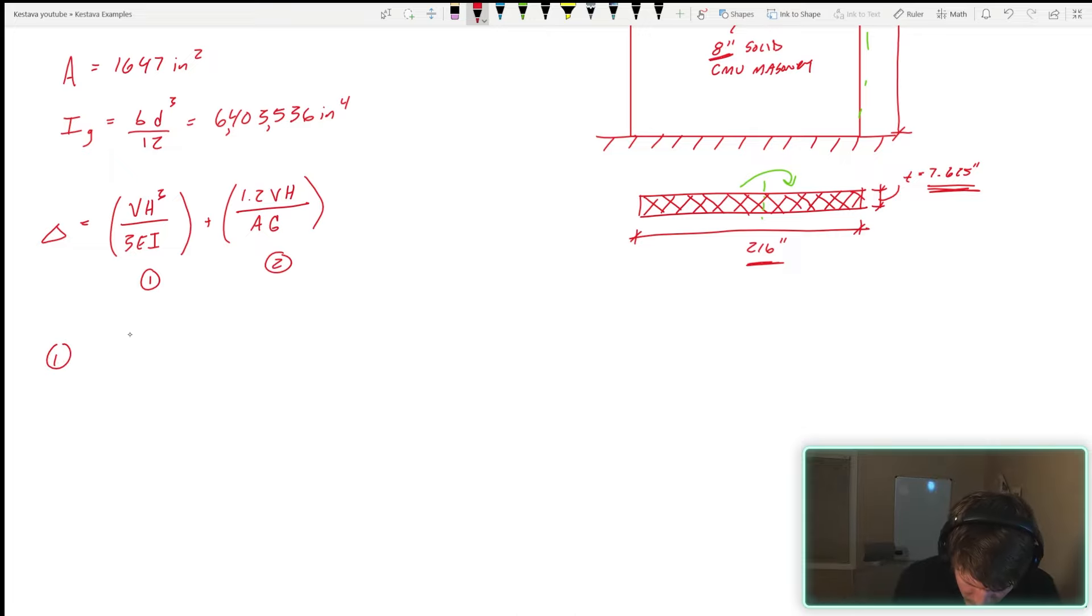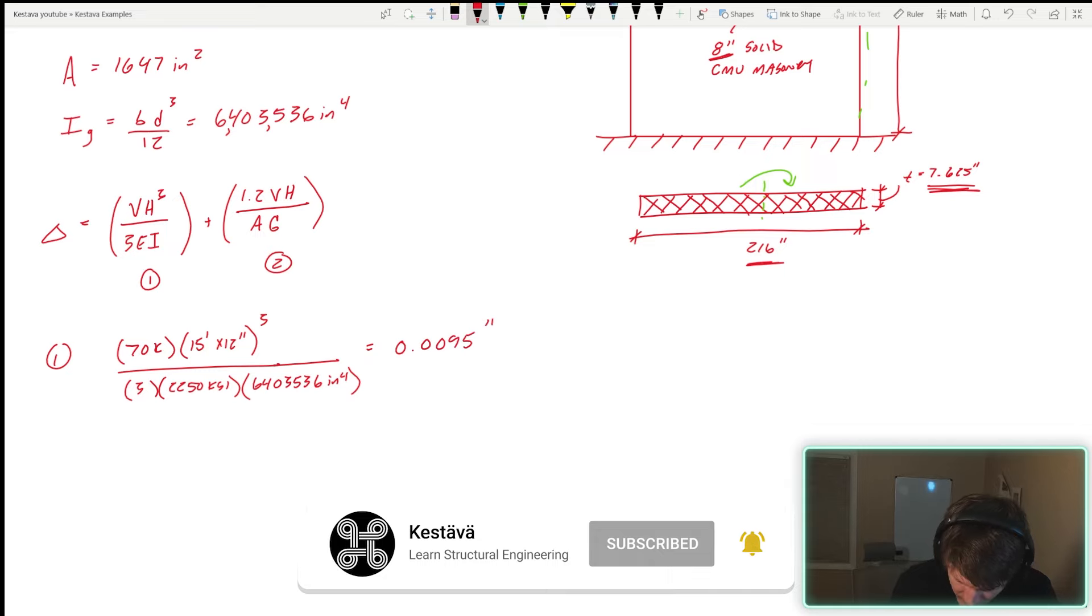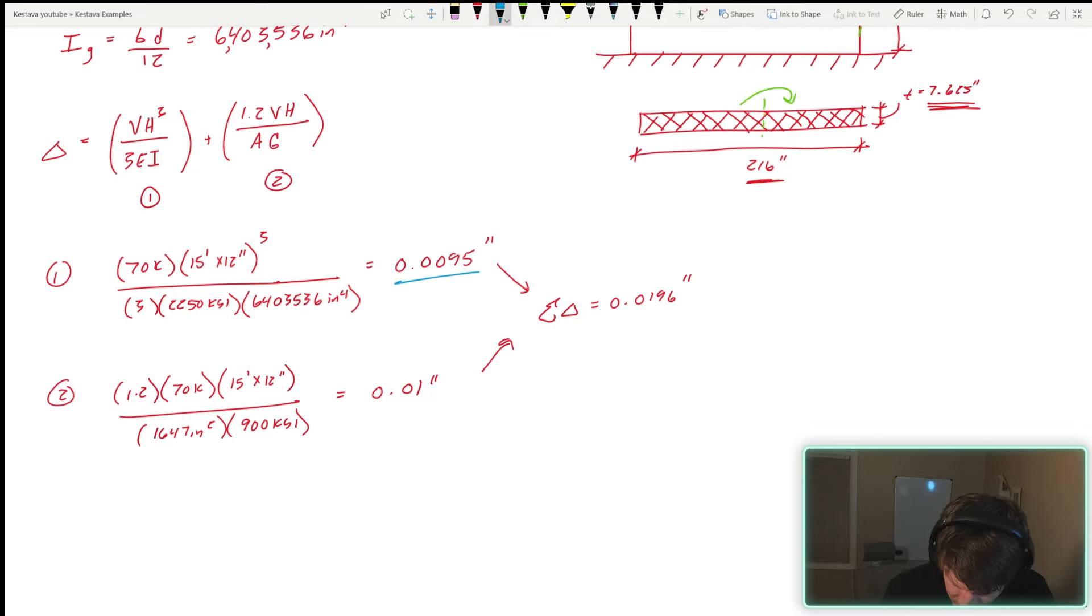Section one, we plug everything in. That spits out 0.0095 inches, not a lot of movement. Section two, plug everything in, that spits out 0.01 inches. If we add these two together, that'll get our total displacement of our wall which is what we're looking for here today. Those two added up gets you 0.0196 inches.